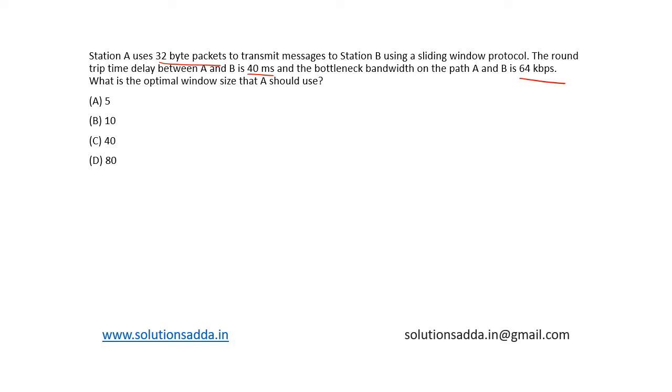So here we are given that the round-trip delay, RTT, between A and B is equal to 40 milliseconds. That is 40 × 10^-3 seconds. And the frame size is given as 32 bytes.